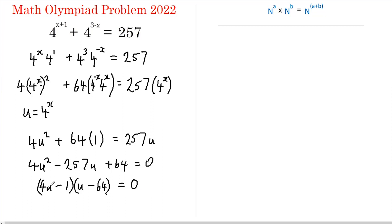We can now say that either 4u minus 1 equals 0 in which case u equals 1 quarter or u minus 64 equals 0 in which case u equals 64. Now let's substitute u back into this formula here and we get that either 4 to the x is a quarter or 4 to the x is 64.